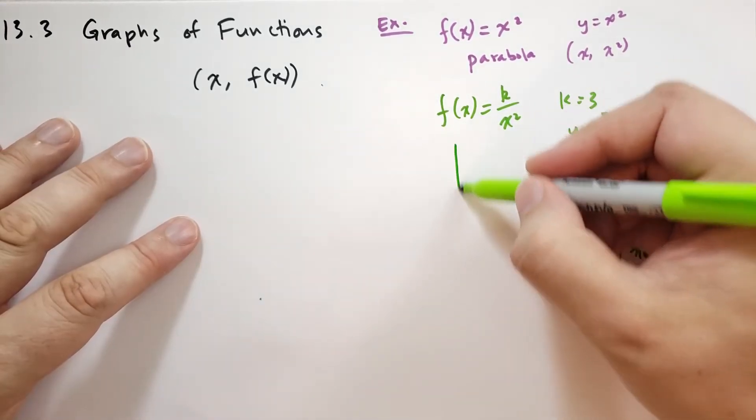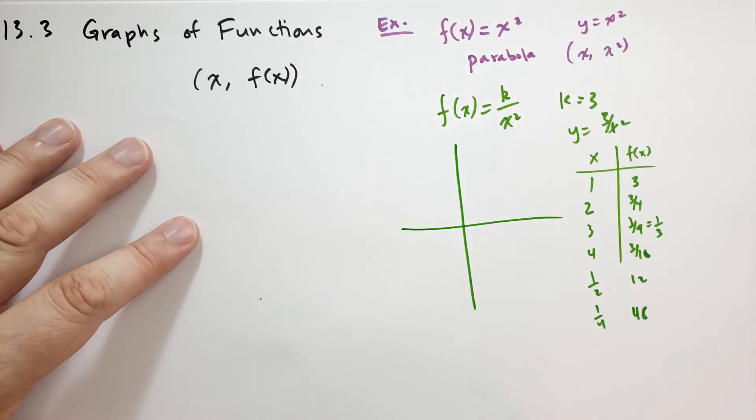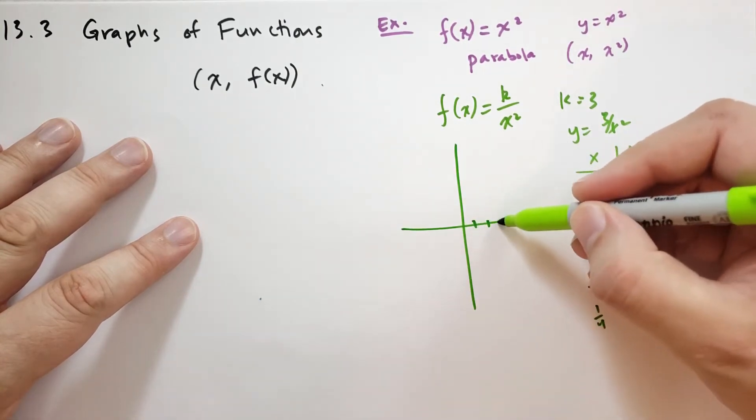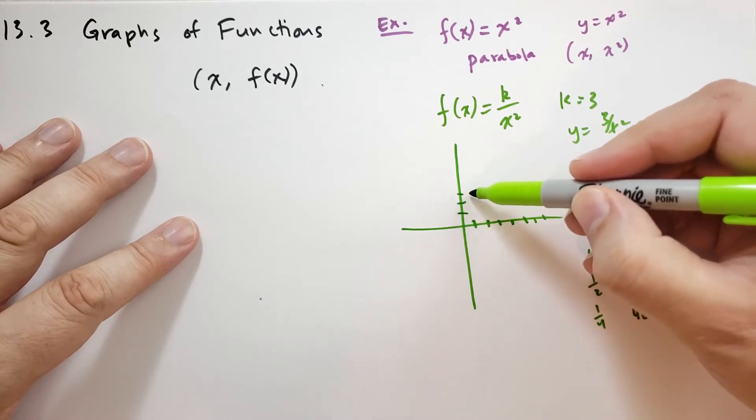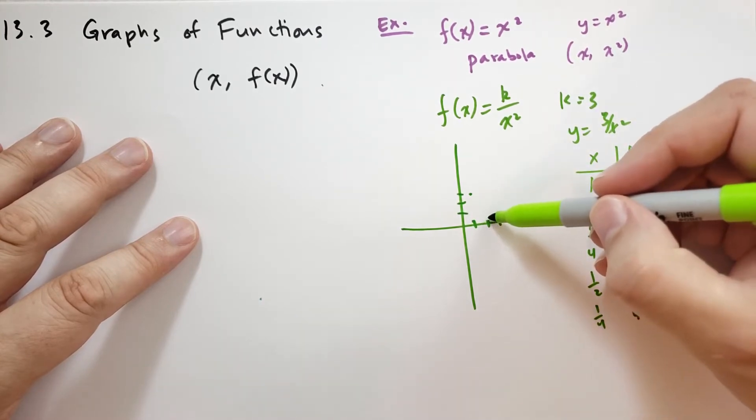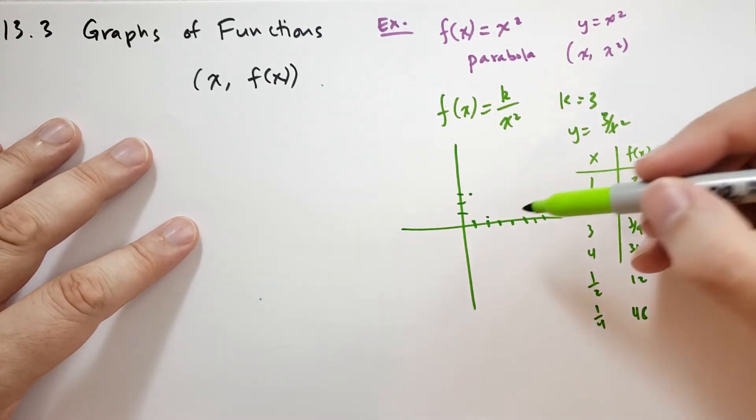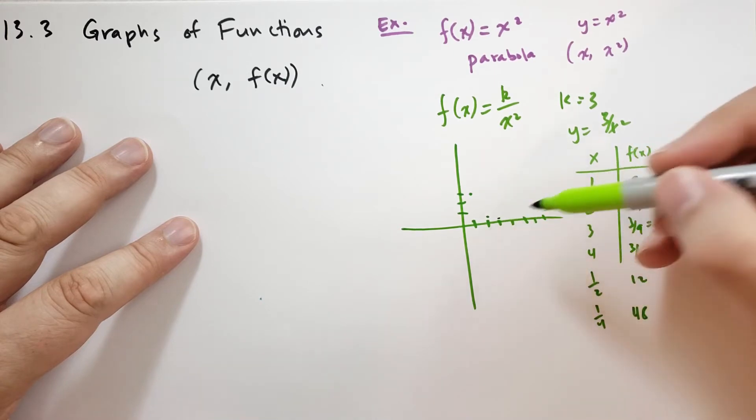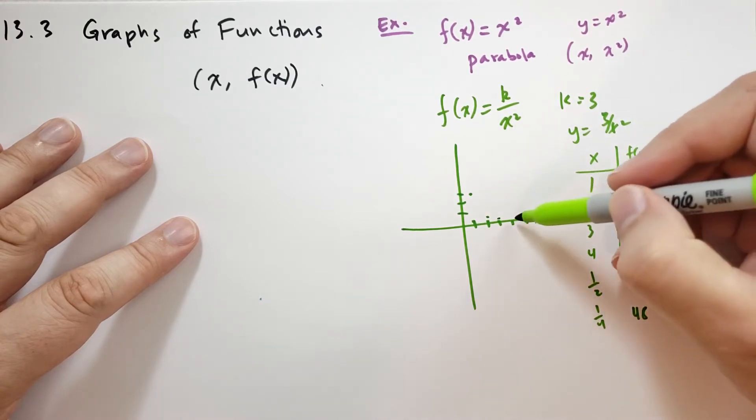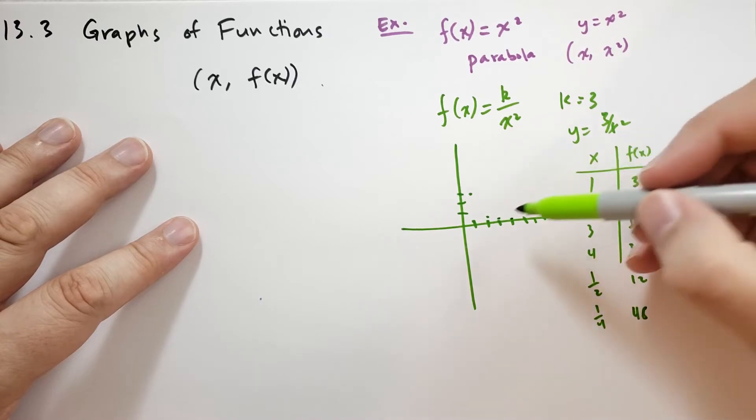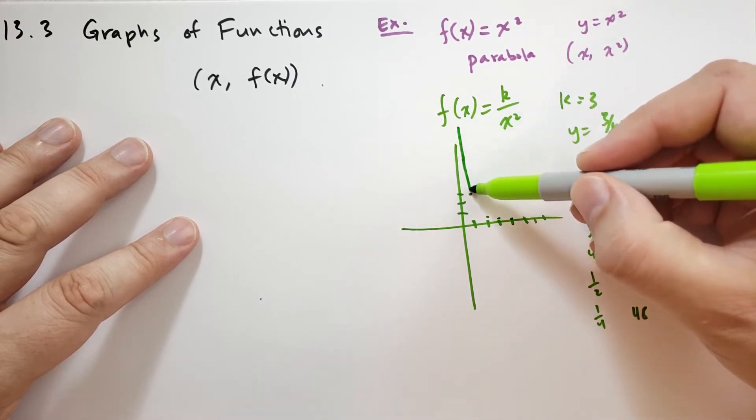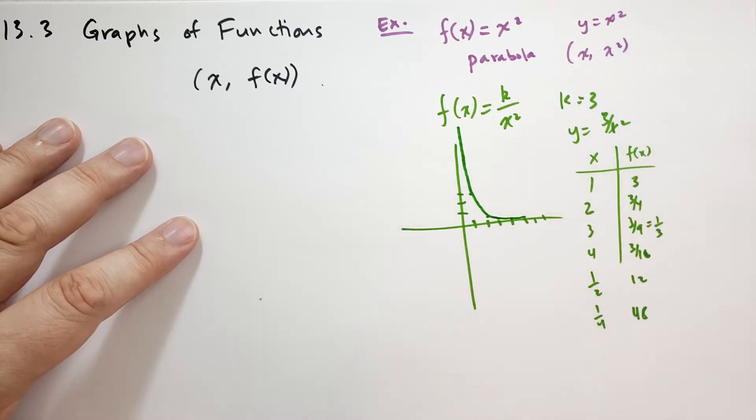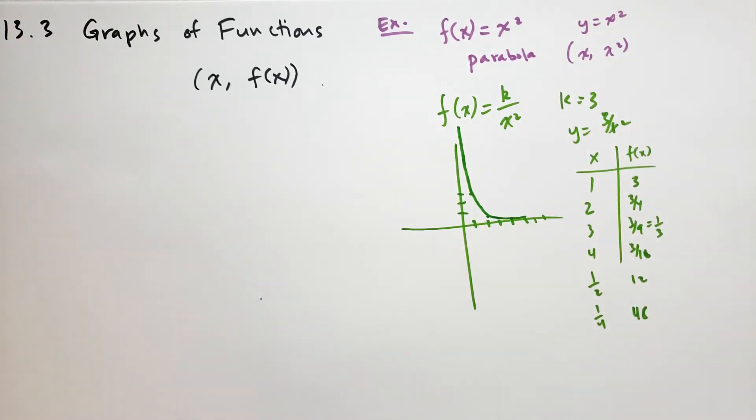And so if we were to sketch such a graph, then at position 1, it would be up there. At 2, it would quickly drop to 3 quarters. 3 would be 3 ninths, or 1 third. And then 4 would be 3 over 16, so it gets very small very quick. And then 1 half is going to be 12, somewhere up here, and then it's going to shoot up and drop down very quickly like that. That's what the graph is going to look like.